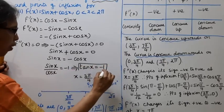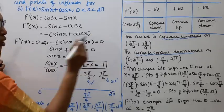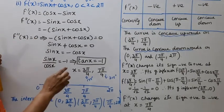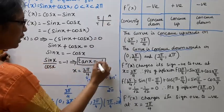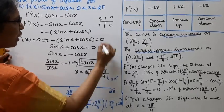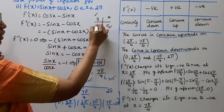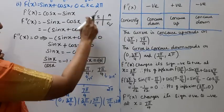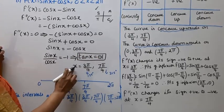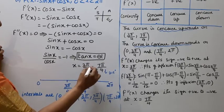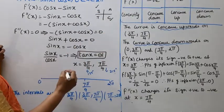Recall tan x = 1 when x = π/4. Now tan x = minus 1. Tangent is negative in the second and fourth quadrants, positive in the first and third. So x = 3π/4 (which is 135°, second quadrant) and x = 7π/4 (which is 315°, fourth quadrant).